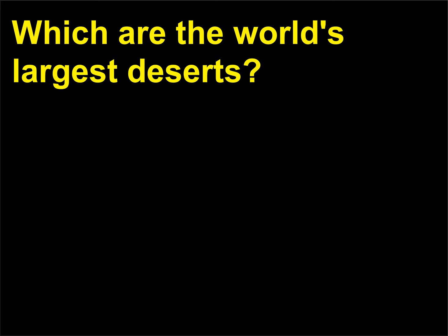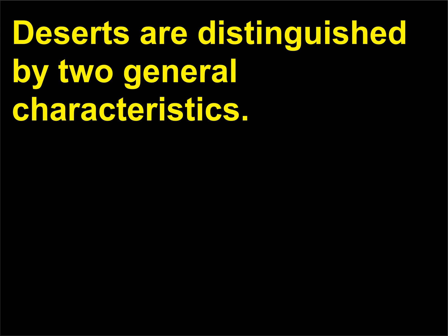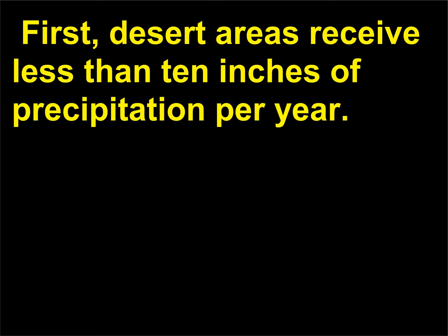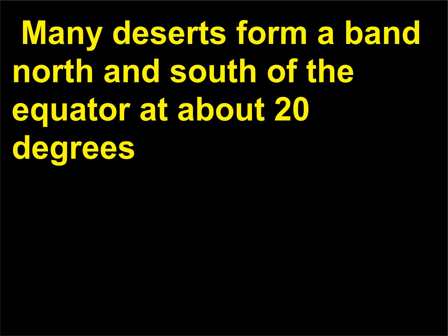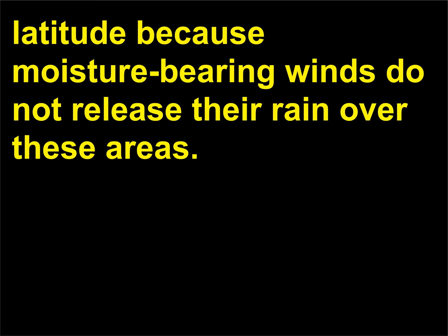Which are the world's largest deserts? Deserts are distinguished by two general characteristics. First, desert areas receive less than 10 inches of precipitation per year. Second, due to the extreme dryness, there is little plant or animal life in most deserts. Many deserts form a band north and south of the equator at about 20 degrees latitude, because moisture-bearing winds do not release their rain over these areas.